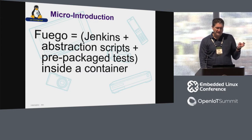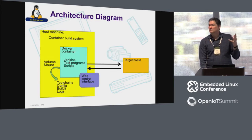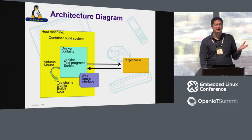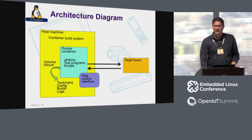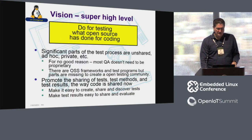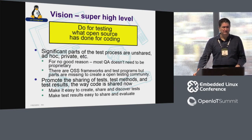There's a bunch of prepackaged tests, all inside a container. This is the architecture diagram. You run most of this stuff on a host, and your device under test is connected to the host, usually via SSH, but we're adding some new transports. The vision, at a super high level, is we want to do for testing what open-source has done for coding.